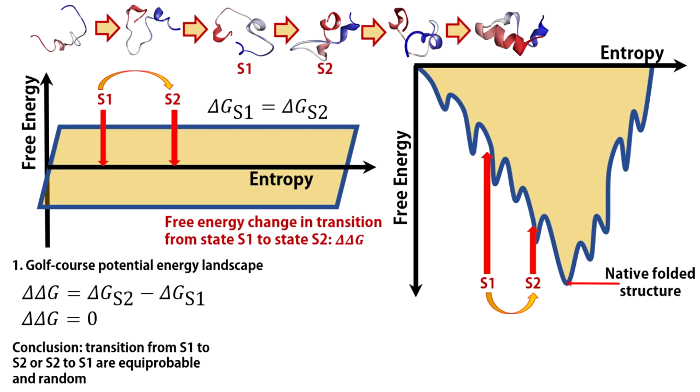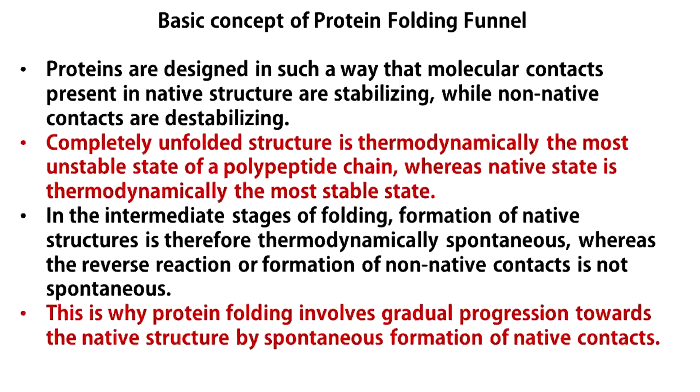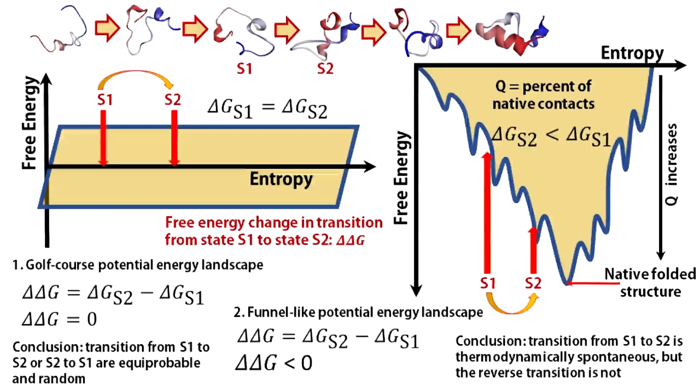When the protein is unfolded, the probable number of conformations are numerous, meaning high entropy. When the protein is folded, there is only one conformation, which means very low entropy. Now, the first assumption is, proteins are designed in such a way that molecular contacts present in the native structure are stabilizing, while non-native contacts are destabilizing. A parameter q is calculated, which is the percent of native contacts present in the structure. The higher is q, the stable is the structure.